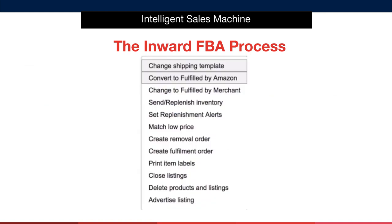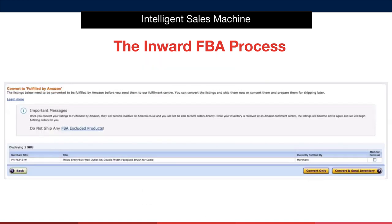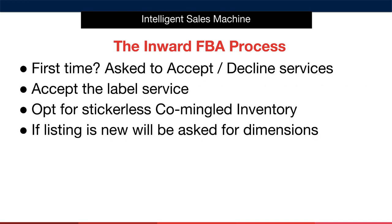When you open the Action menu, you have a number of options. You want to select the option 'Convert to Fulfilled by Amazon.' This area is confirmation that you want to convert, so you simply select the button that says 'Convert and Send Inventory.' Now when you do this for the first time, you will be asked by Amazon to confirm a number of settings.